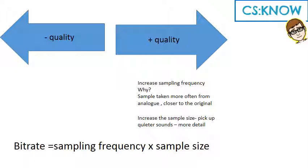So if we increase the sampling frequency, the samples taken more often from the analogue closer to the original, that will make it better. The more samples we take, the better it will be. However, like anything in computing, the more samples we take, the more space we're going to need to store it.